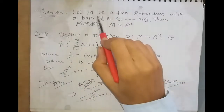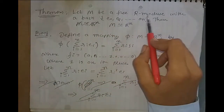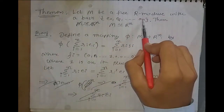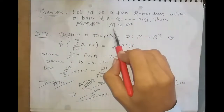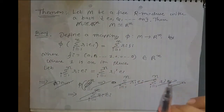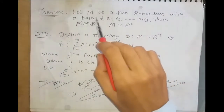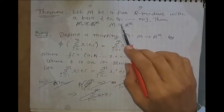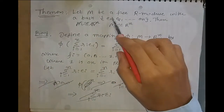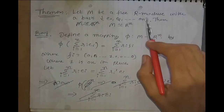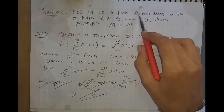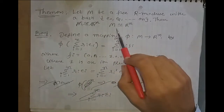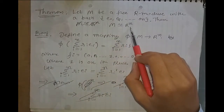Theorem: Let M be a free R-module with a basis E1, E2, up to En. Then M is isomorphic to R^n. Every element of M is a linear combination of all these basis vectors with scalars from the ring R, and our aim is to show that M is isomorphic to R^n.